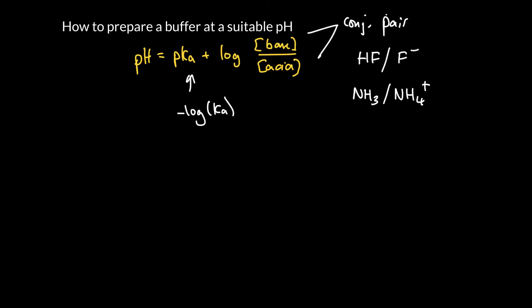We've seen before that if we're trying to make the best buffer, we would presumably want to have the concentration of the acid in the buffer approximately equal to the base. And you might say, why is that?